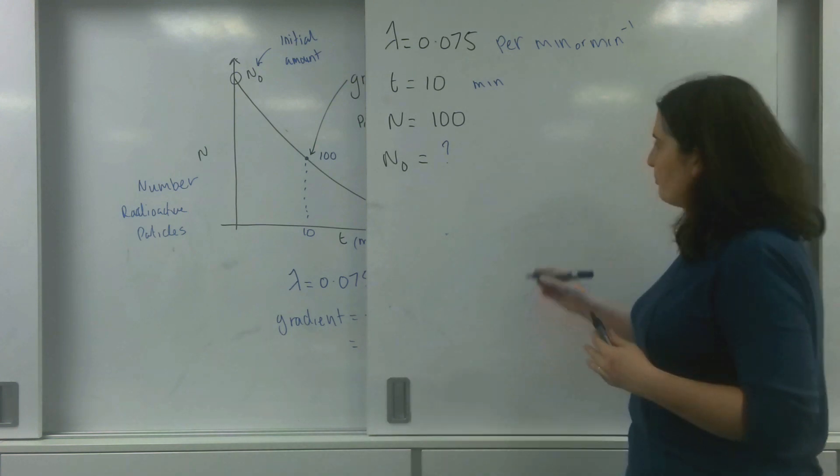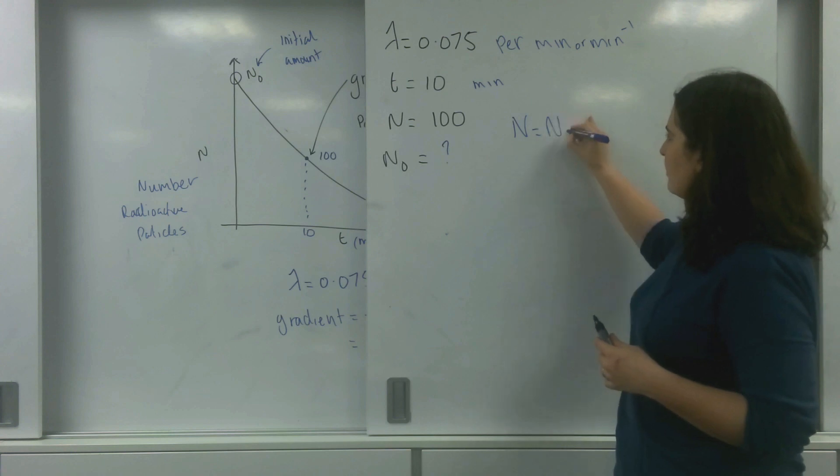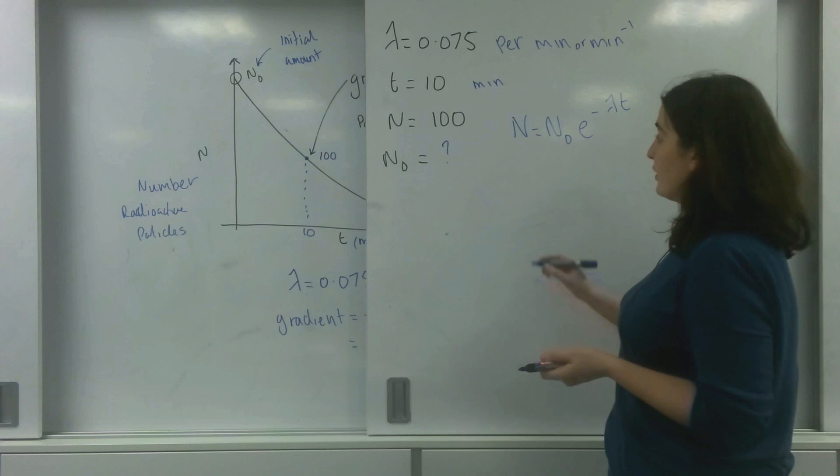is I write the formula I'm going to use. So that's n equals n naught e to the minus lambda t. And I'm going to put the values I know.